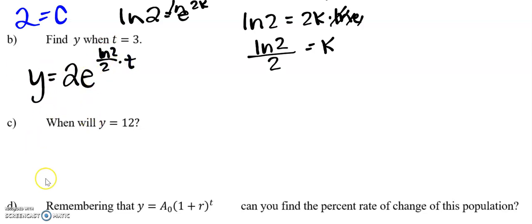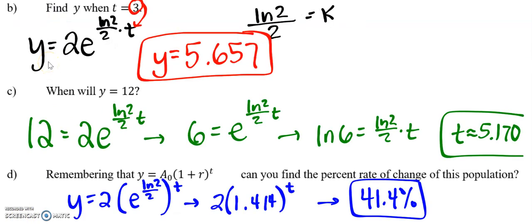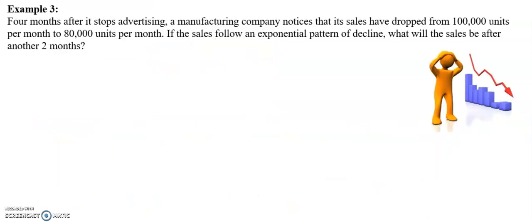All right. So I want you to try b, c, and d. These should all be practiced from pre-calculus. So we now have our new equation, y equals 2e to the natural log of 2 over 2 times t. Go ahead and answer b, c, and d. Pause your video. All right. I've got all my work shown in the answers. So hopefully that went okay for you. If not, that would be a good thing to post in the discussion board and work out with your teacher.